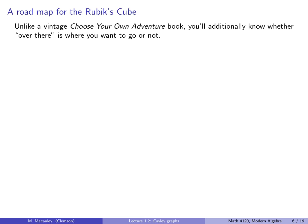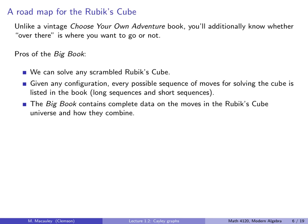Okay, so unlike a vintage choose your own adventure book, you will additionally know whether over there is where you want to go or not. So this is like a choose your own adventure book, but it's better. Okay, so some pros of the big book. Well, first of all, we can solve any scrambled Rubik's cube. I mean, this is a manual for it and we can do it optimally. Secondly, given any configuration, every possible sequence of moves for solving the cube is listed in the book, long sequences and short sequences. And thirdly, the big book contains complete data on the moves in the Rubik's cube universe, i.e. the group and how they combined.